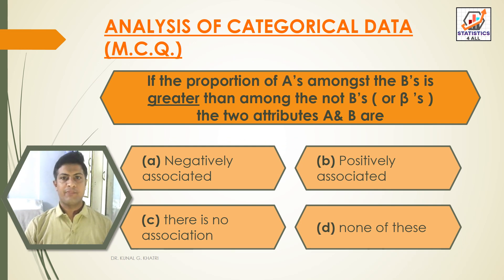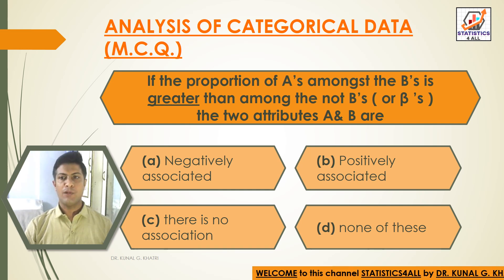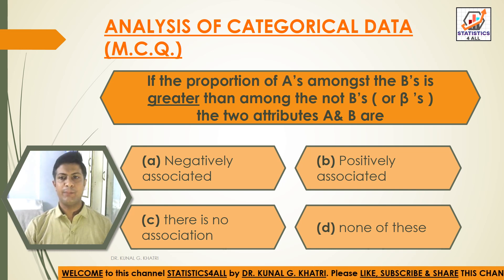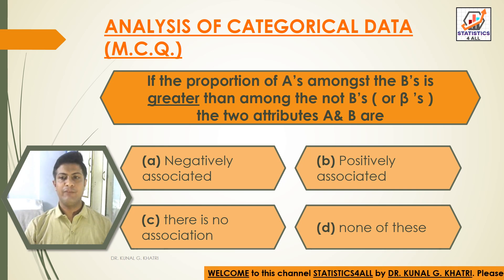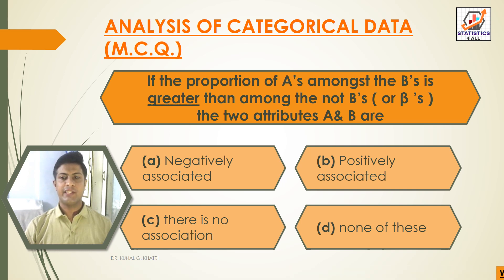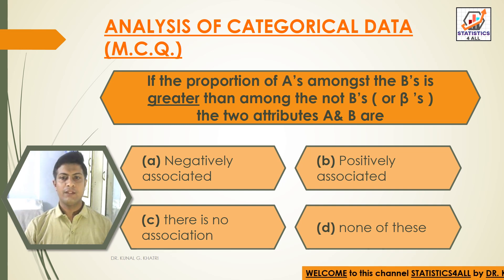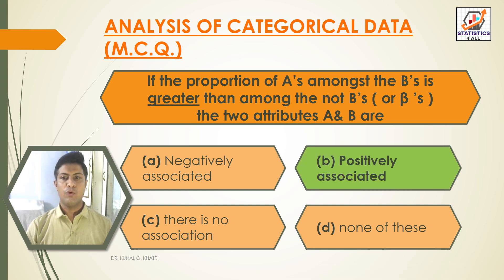First question: if the proportion of A's amongst the B's is greater than among the not-B's (or beta's), the two attributes A and B are — option A: negatively associated, option B: positively associated, option C: there is no association, option D: none of these. The answer is option B, that is positively associated.